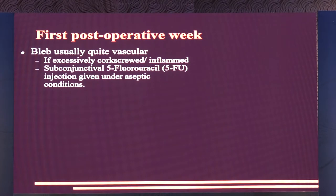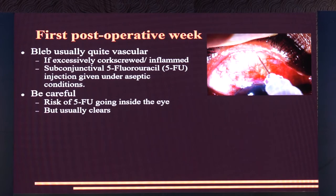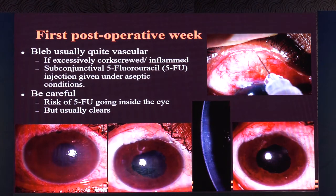If the bleb is excessively corkscrewed or inflamed, give subconjunctival 5-fluorouracil (5-FU) under aseptic conditions — usually 5 mg per 0.1 cc; it's available as 250 mg in 5 cc or 500 mg in 10 cc. Be careful: there is a risk of 5-FU entering the eye. Never massage first and then give 5-FU, because hypotony will drag the 5-FU in. I'm sharing this because I've done this — the cornea can be severely damaged. Thankfully, with frequent steroids the patient's endothelium recovered, but it is dangerous.